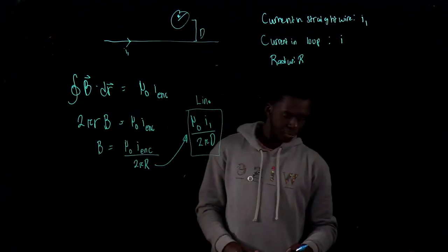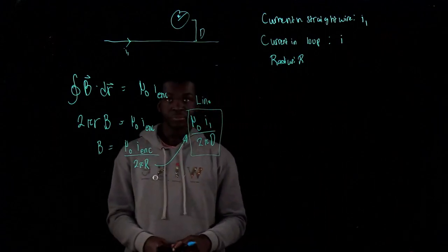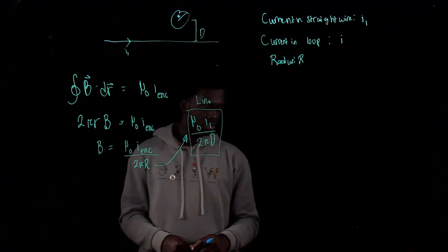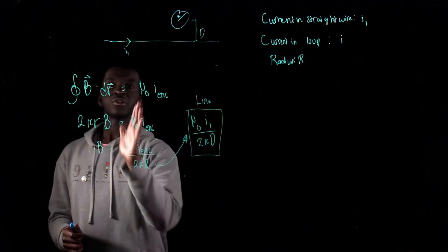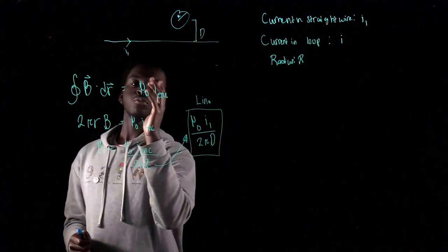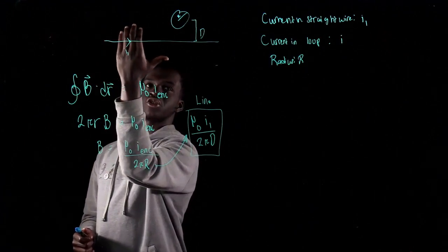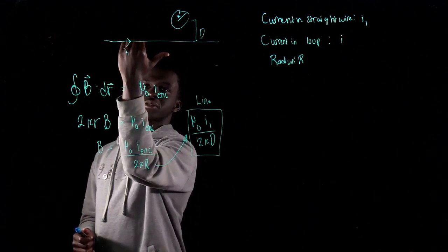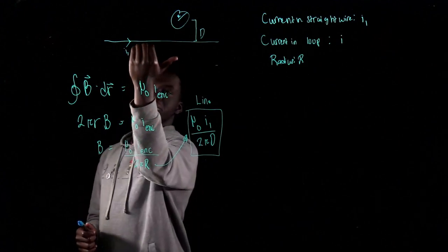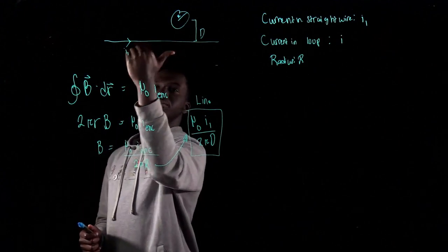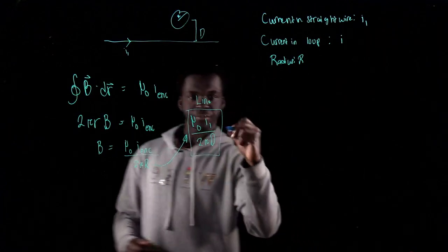For the direction of the straight wire's field: using the right-hand rule, put your thumb along the current direction and curl your fingers — the field at the center of the loop comes out of the page.